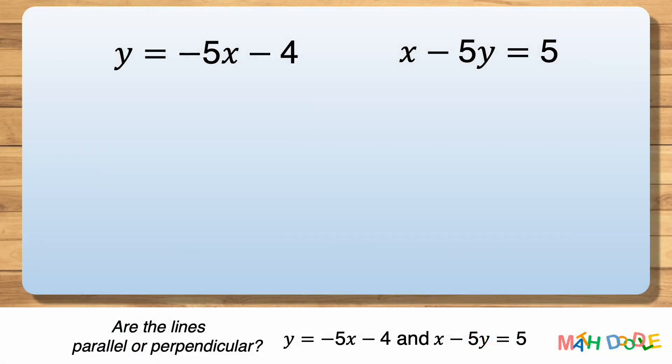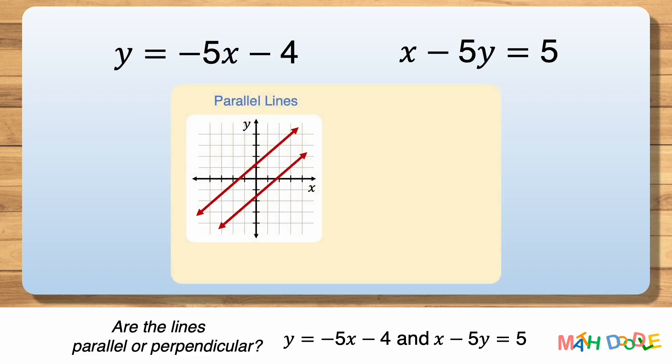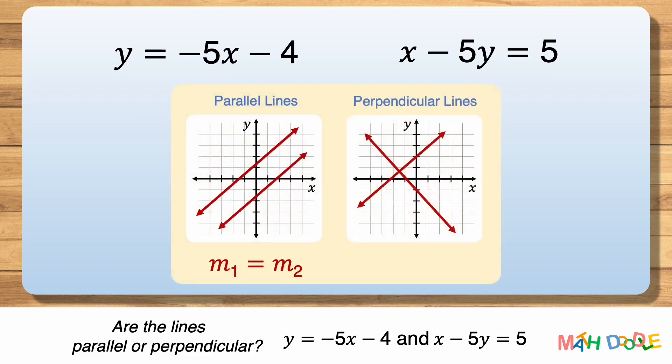We can determine if two lines are parallel or perpendicular by comparing their slopes and y-intercepts. Parallel lines have the same slope and different y-intercepts. On the other hand, perpendicular lines form a right angle in the same plane.